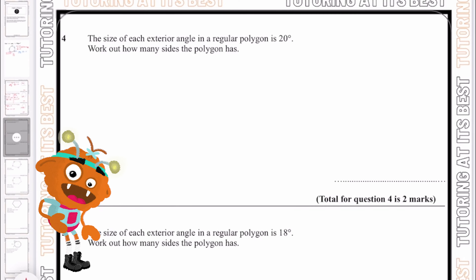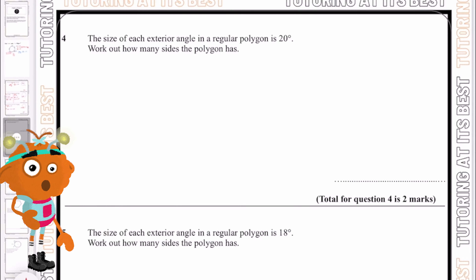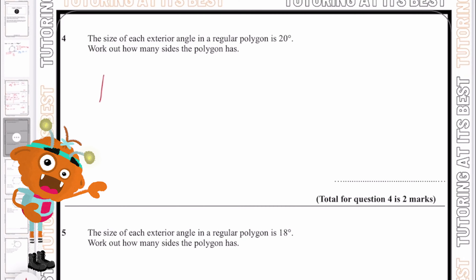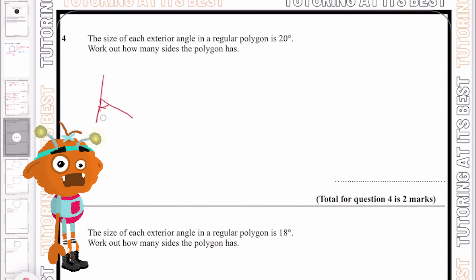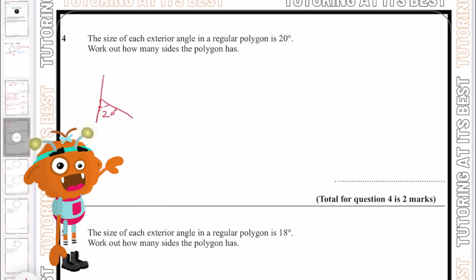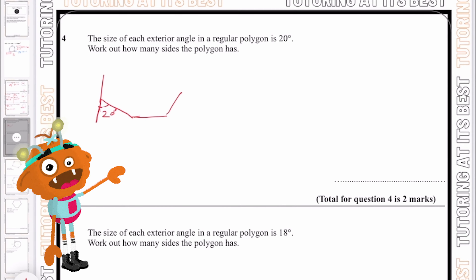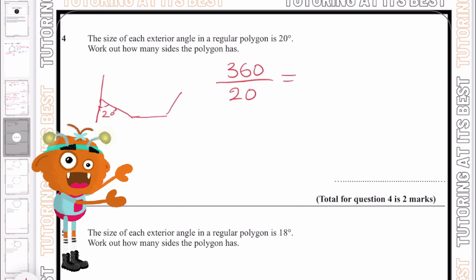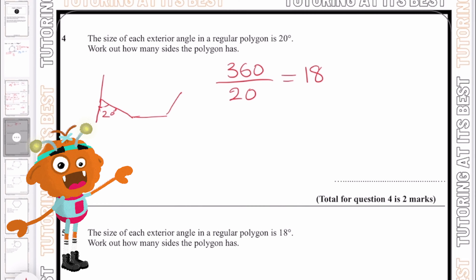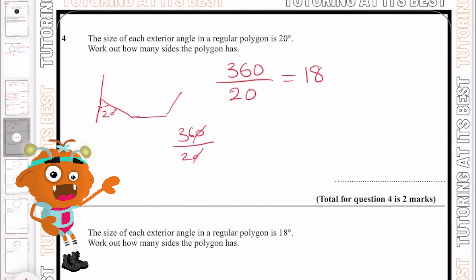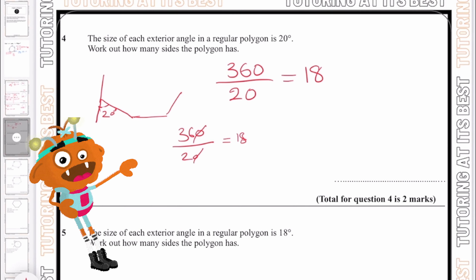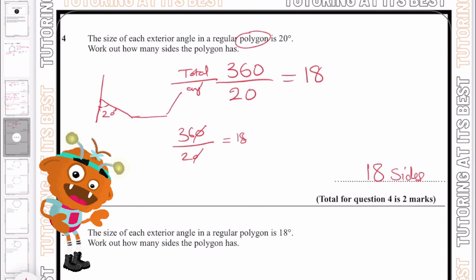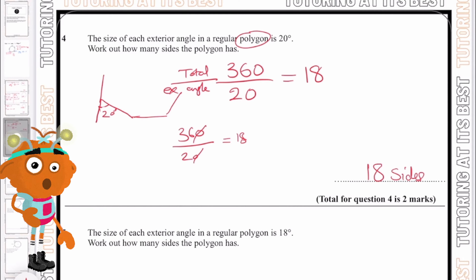Question four: the size of each exterior angle in a regular polygon is 20 degrees. Work out the number of sides the polygon has. Since the sum of exterior angles is 360, we do 360 divided by 20. Cancelling a zero, that's 36 divided by 2, which gives 18. So this polygon has 18 sides.